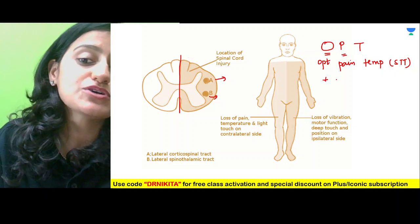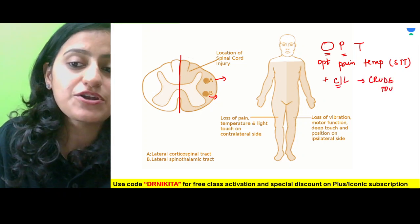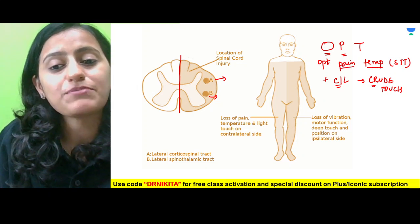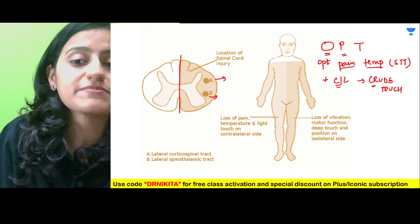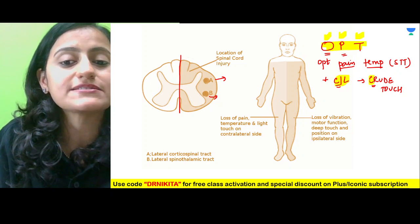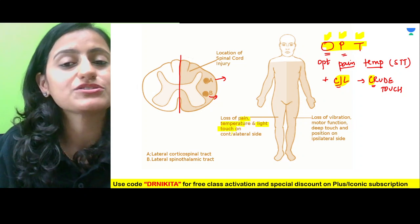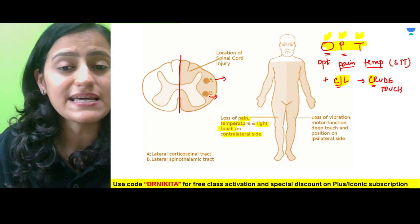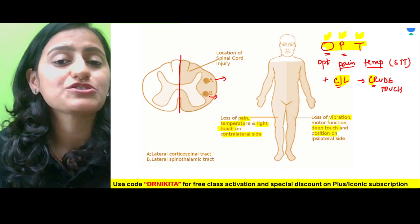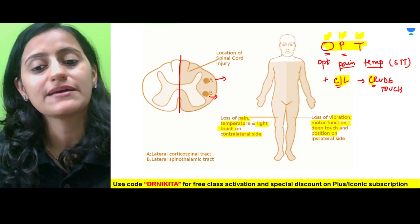Also lost on the contralateral side is crude touch — remember C for C, crude touch. So the contralateral losses are: pain, temperature, and crude touch. The rest — vibration, proprioception, deep touch, fine touch, and motor function — all go on the same (ipsilateral) side.